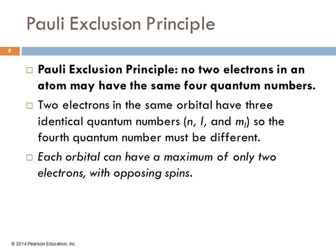The Pauli exclusion principle tells us that no two electrons in an atom can have the same four quantum numbers. So each electron has a unique set of quantum numbers, a little bit like a social security number or something. If you have two electrons in the same orbital, then they're going to have three identical quantum numbers: the principal, the angular momentum, and M sub L.